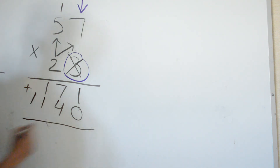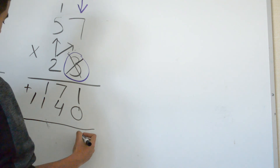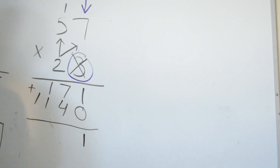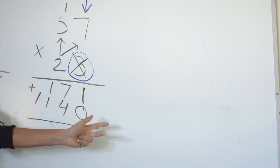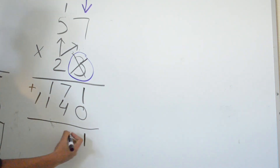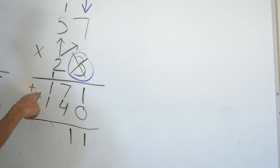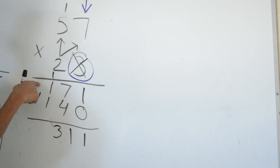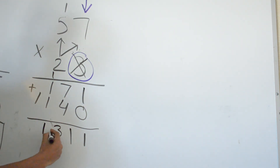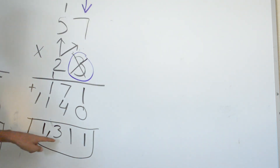Now we add both of our numbers to get our final answer. 1 plus 0 is 1. 7 plus 4 is 11. Bring the 1 up. 1 plus 1 plus 1 is 3. 1 plus nothing is 1. And our final answer is 1,311.